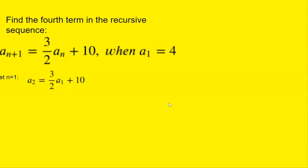We get a₂ = (3/2)a₁ + 10. Since we know a₁ is 4, we can plug that in. 3/2 times 4 equals 6, and 6 plus 10 is 16. So now we know a₂ = 16.